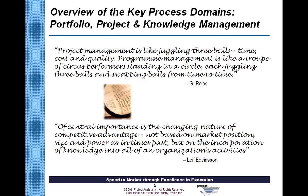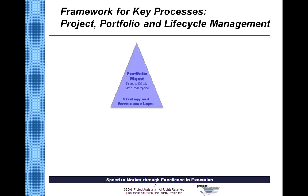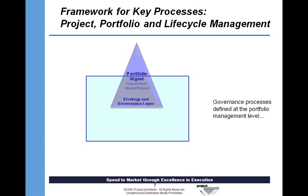Our first subject is the overview of key process domains: portfolio management, project management, and knowledge management. I'd like to put these three into context. At the top of this pyramid, we have portfolio management — our strategy and governance layer — a set of processes used when setting up a project portfolio. Key process areas include proposing projects, selecting which projects will be approved, measuring progress, and responding to how that measurement is going.